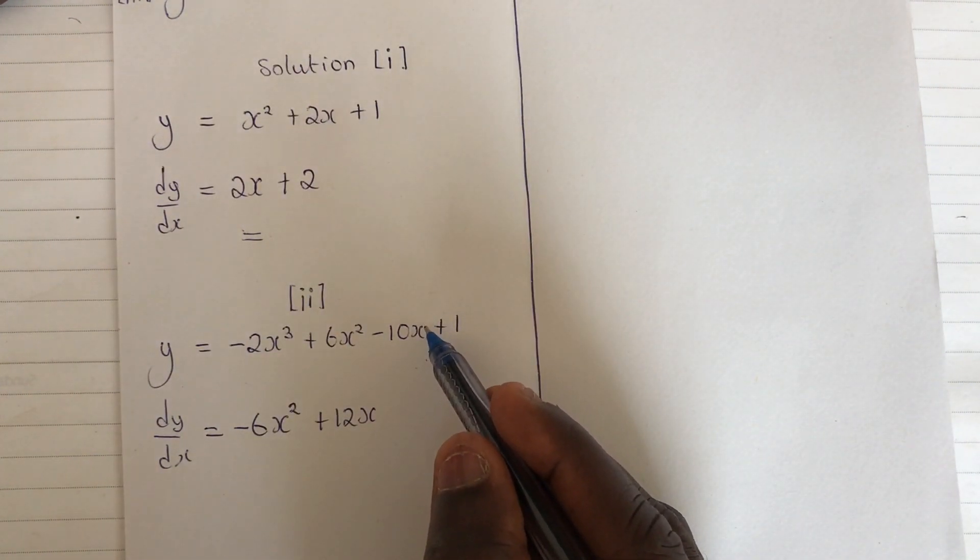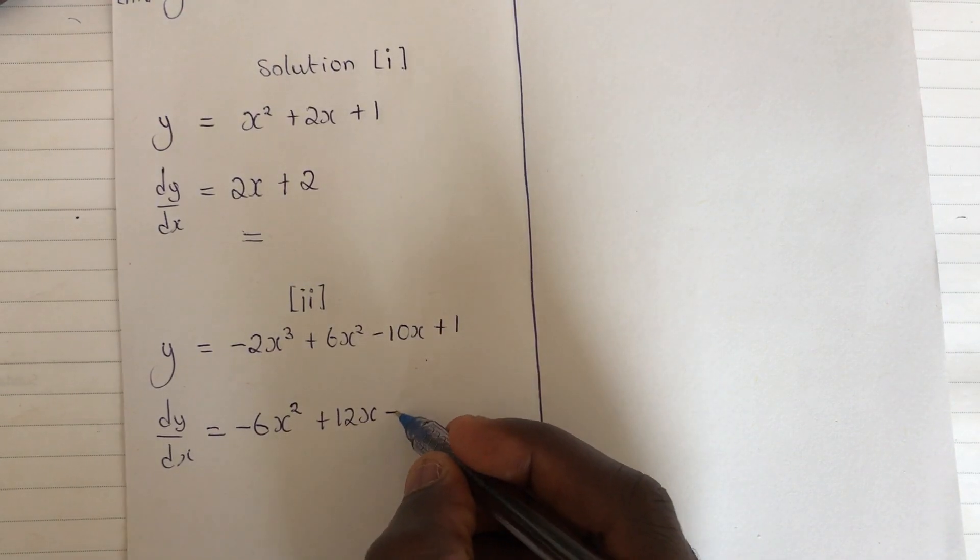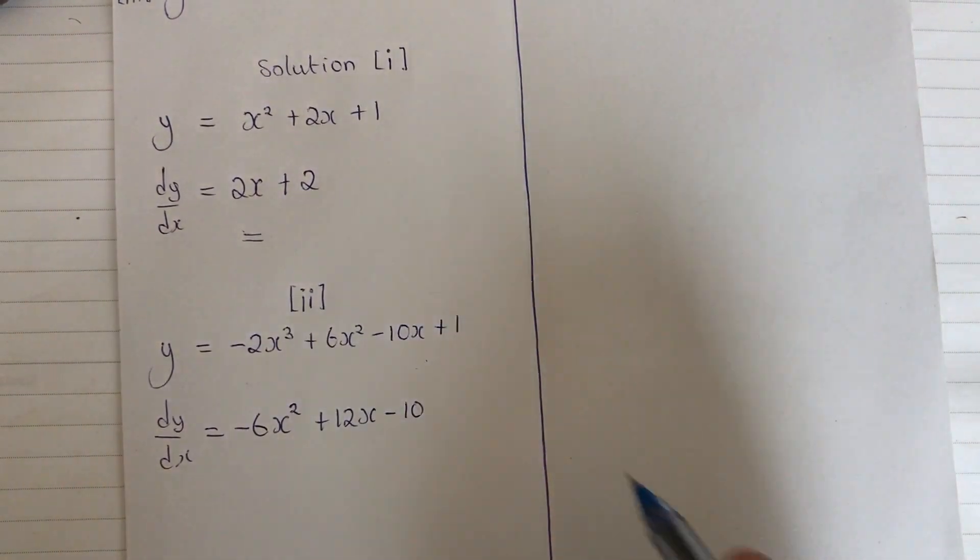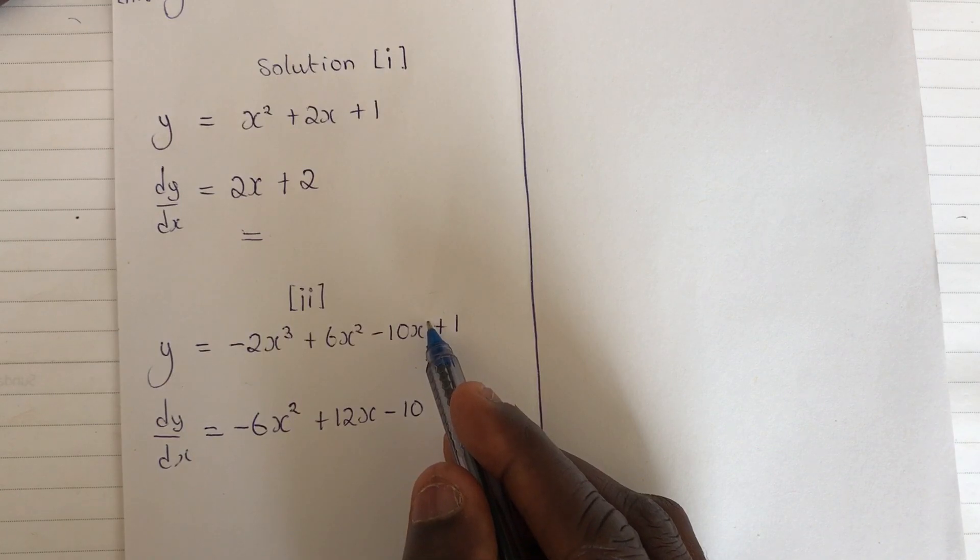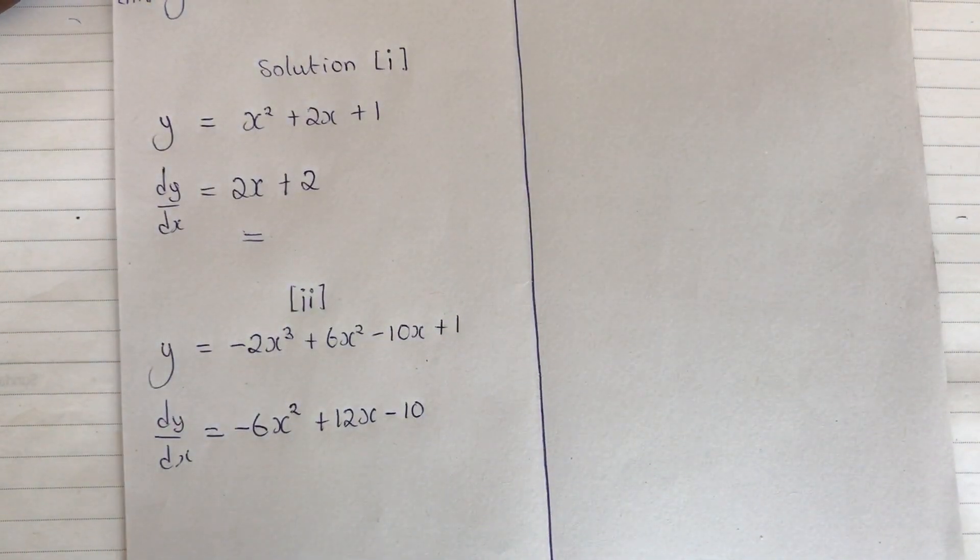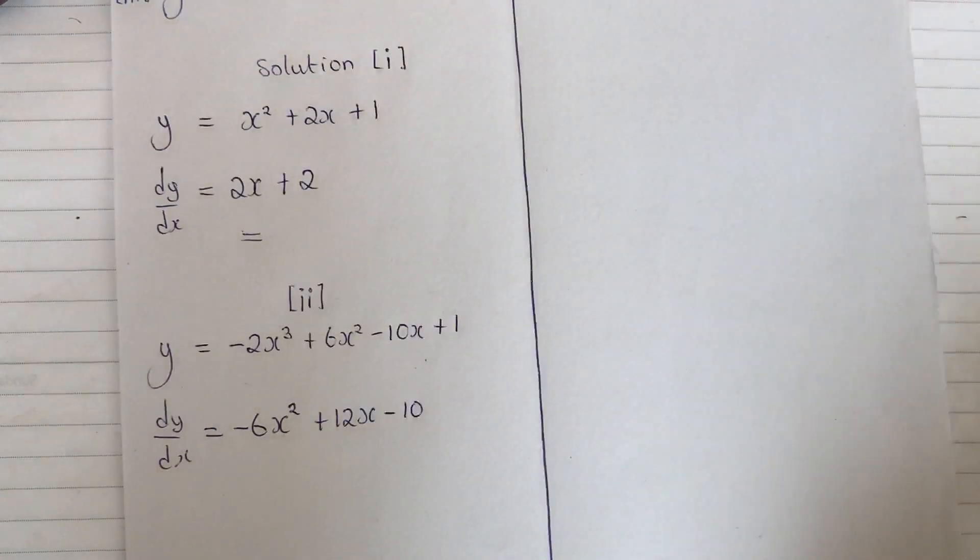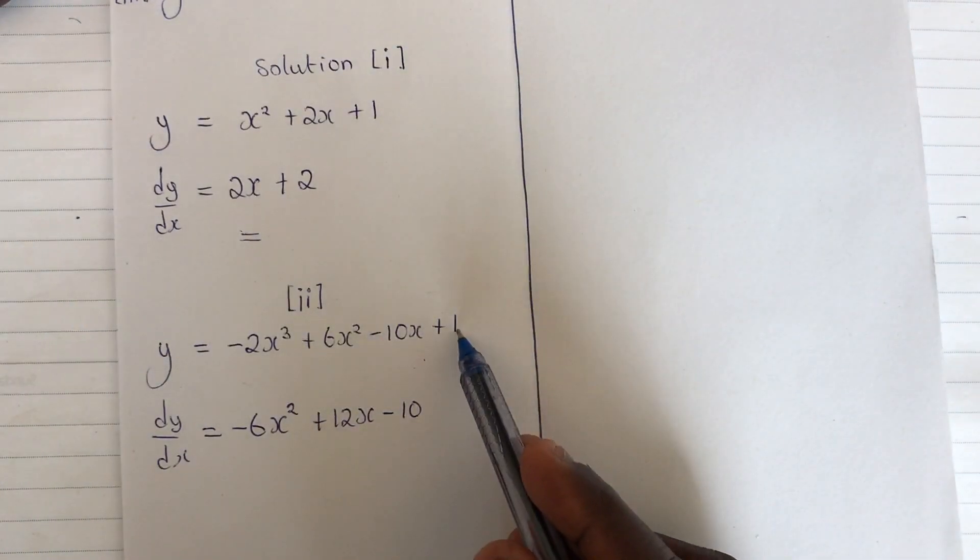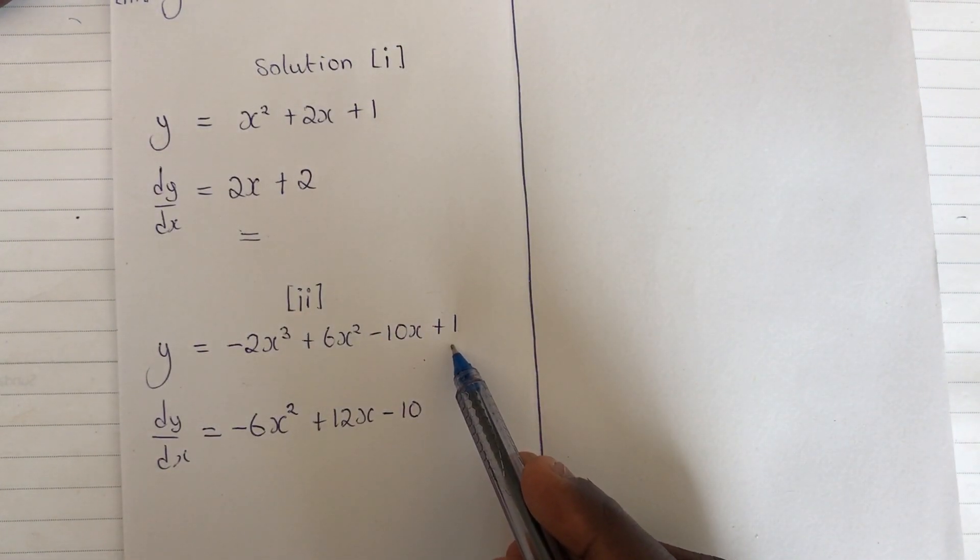Then we have an exponent here which is 1. 1 times 10, we are having minus 10. Now reduce the power by 1. 1 minus 1 will give us minus 10x which is to the power 0. Anything to the power 0 is 1, so 1 times 10 will give us 10. Now we move on to the constant. Differential of a constant is 0, so there's no need for me to write that. This is my final result.